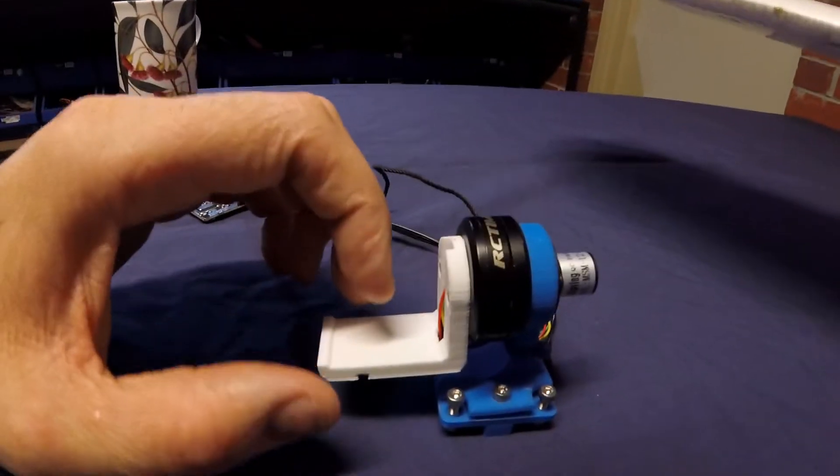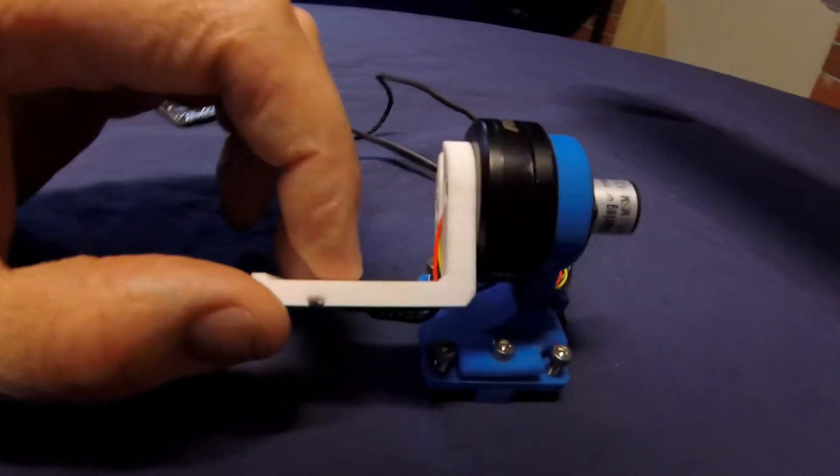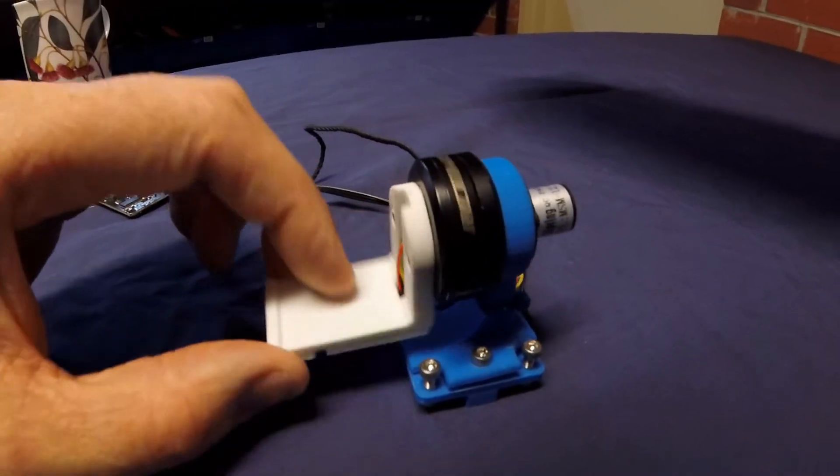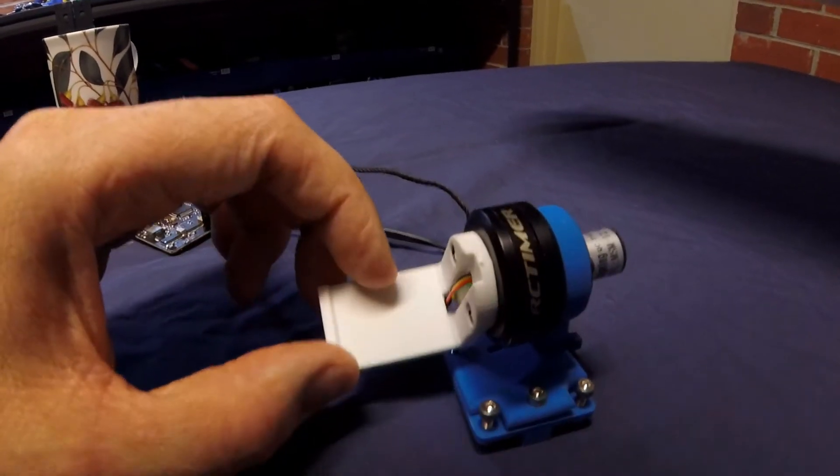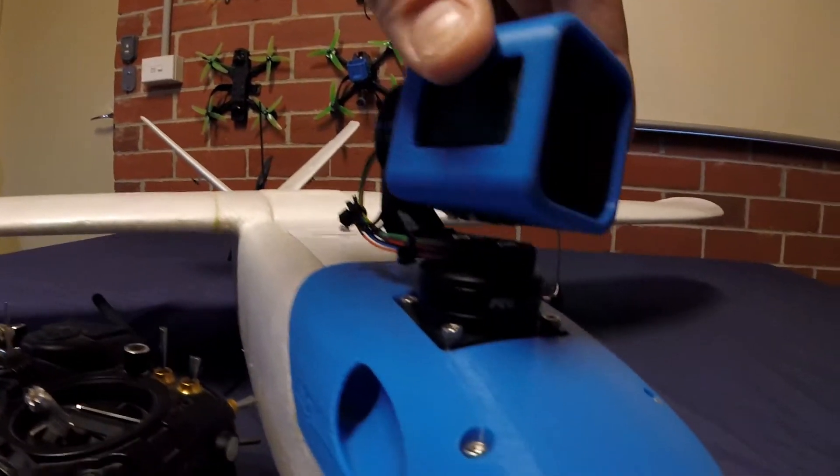This is my old gimbal setup. This is a single axis roll motor. It works pretty well but I always felt a bit limited that I couldn't twist it around and look backwards or out over the wing. So that's why I've built up this one with a pan motor too.